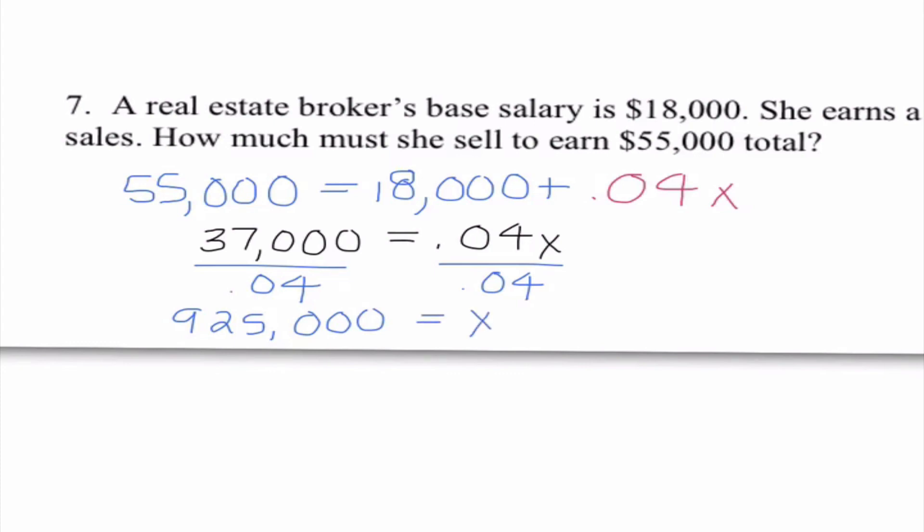Now if you gave me that as your answer, I would not give you full credit because you actually did not answer the question. What is x representing? Well, it's representing money. So she is selling $925,000 worth of property. So we need to go ahead and put a dollar sign in front of that.